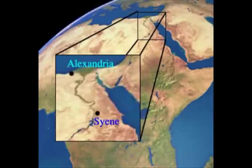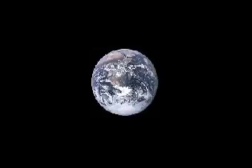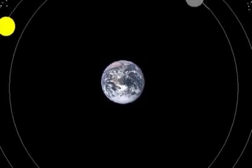He knew that on the longest day of the year, the sun was directly overhead at Syene in the south of Egypt, but cast a shadow in Alexandria to the north. By measuring the length of the shadow, he could work out the earth's diameter. But while the earth might be spherical, the dogma of a fixed earth still held sway, backed by a powerful church.